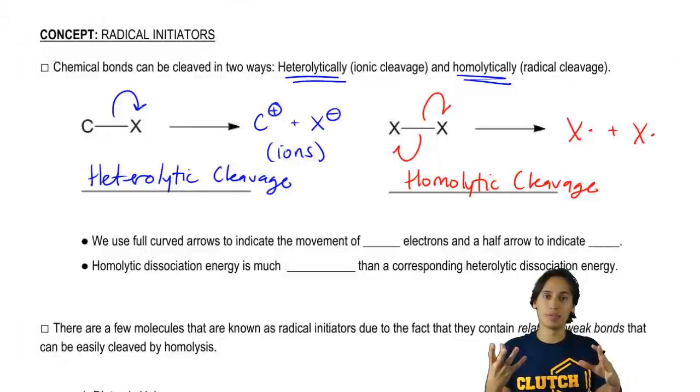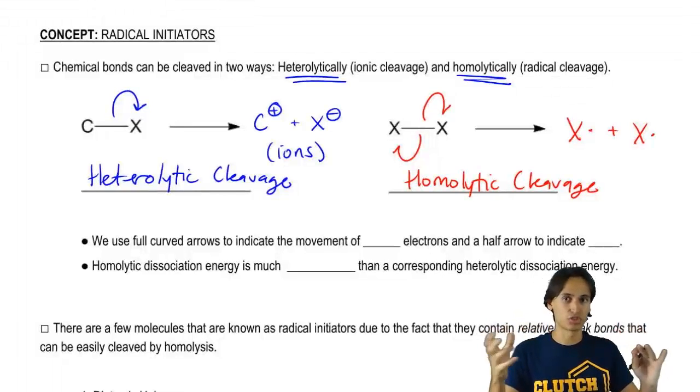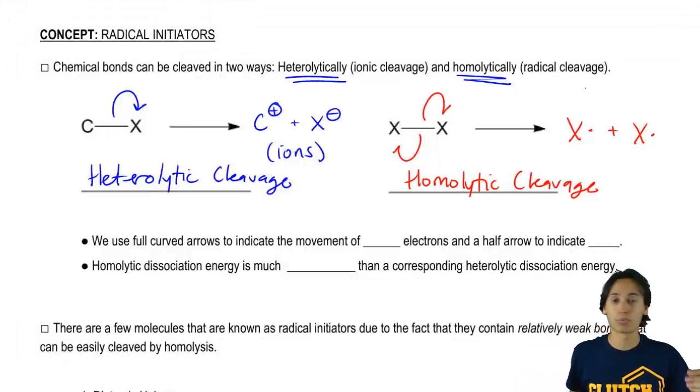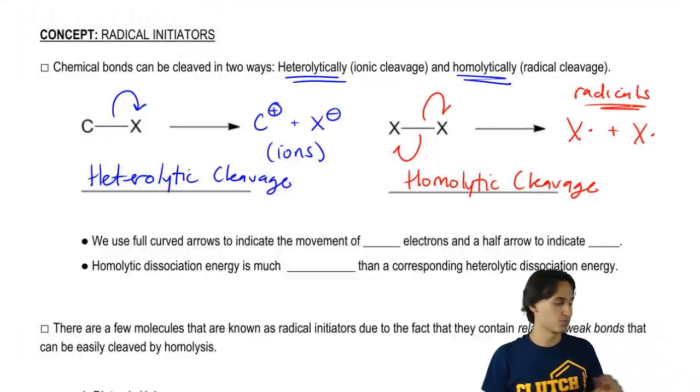In this case, homo meaning same, you're getting basically the same electrons on both. And notice that our product here would be radicals. Cool so far? Awesome.